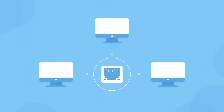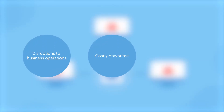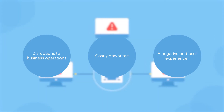An Ethernet cable is a network cable that ensures connectivity between devices. It acts as a pathway to access the internet. Since sensitive operations are carried out in a network, a one-minute interruption to connectivity could lead to immense damage, including disruptions to business operations, costly downtime, and a negative end-user experience.